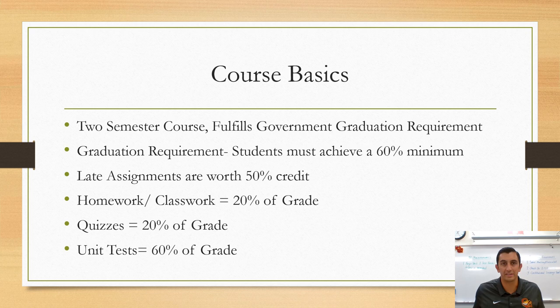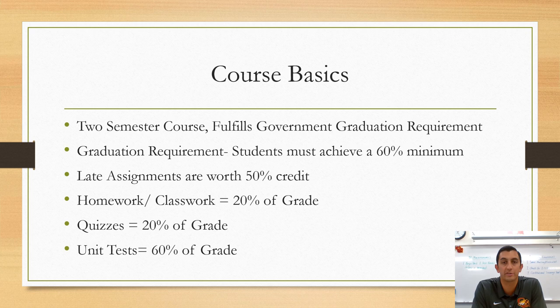AP Macroeconomics is a two-semester, full-year course. It fulfills both the government and economics graduation requirement. The graduation requirement is that students receive a minimum of 60% of available points both semesters. Late work is valued at half credit, or 50%. Homework and classwork account for 20% of the overall grade, quizzes are 20%, and unit tests are 60%. So there is a heavy emphasis on the unit tests this year.